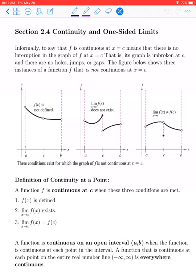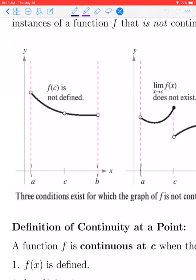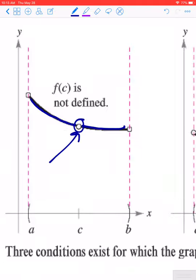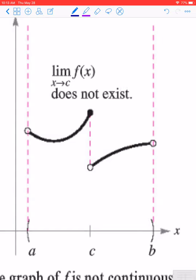However, there are some situations where a function will not be continuous. For example, if the function is not defined at the point c — so if f of c does not exist — then the function will not be continuous there. If we try to draw this graph, we would have to momentarily lift our pencil to incorporate that open circle, because the function lacks a value at c. Another reason why a function may not be continuous at x equals c is if we get a different left-hand and right-hand limit.